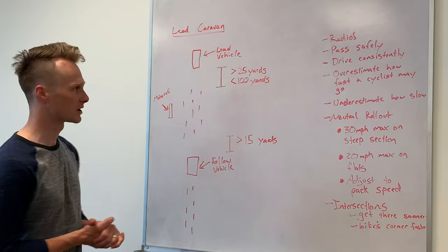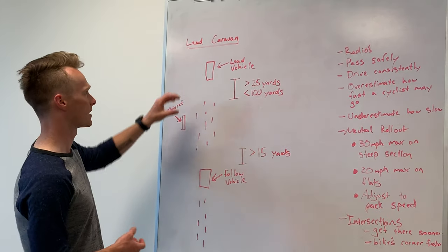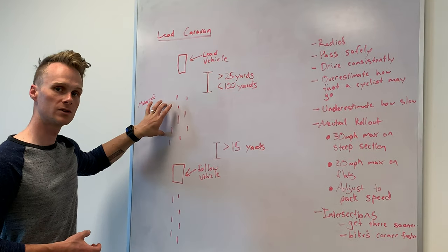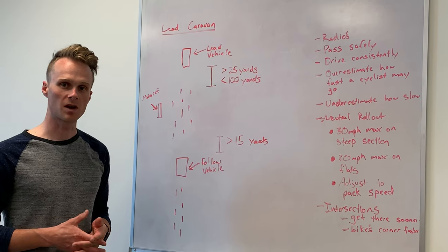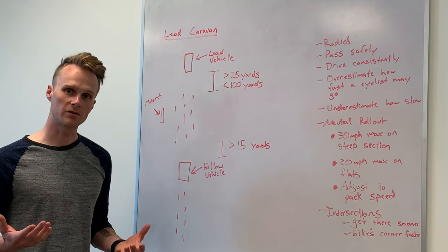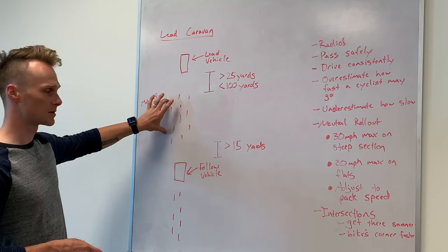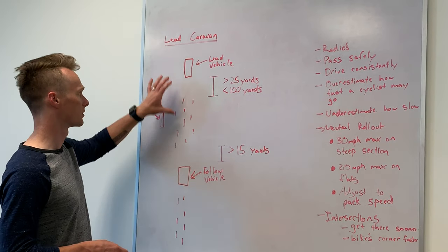So let's talk about the race caravan. This is going to be the lead caravan. We have a lead vehicle in the front. We have the main field of riders in the middle. The riders are going to want to stay together as much as possible during the race in order to maximize their efforts and draft off of one another. The field is going to be followed by the follow vehicle, which is at the rear of that lead pack.